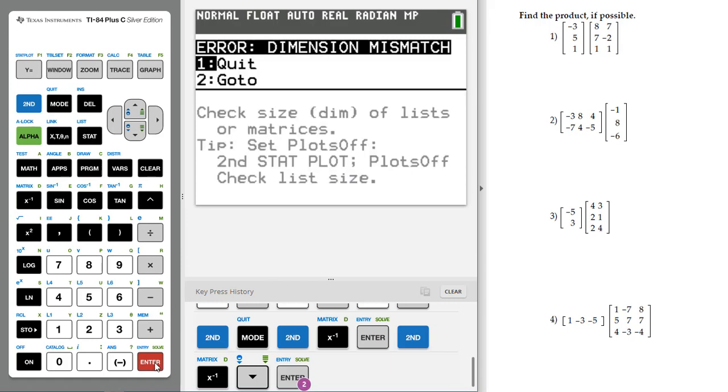But notice you get an error. It says dimension mismatched. And if you read down here, it says check the size or dimension of your matrices. And so you notice that I said we cannot multiply this. This would be called, you would just say, undefined. And so you don't want to do something like that.